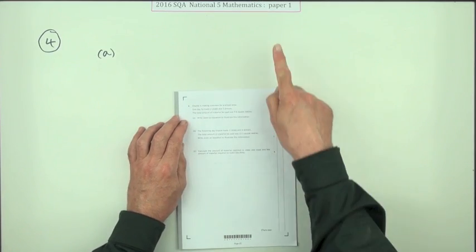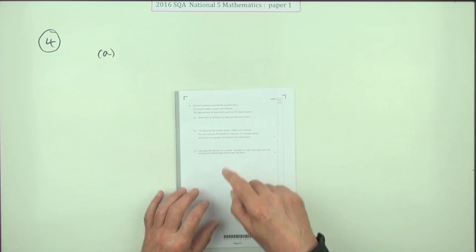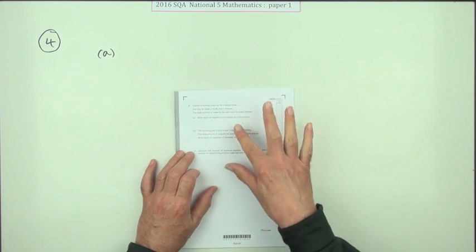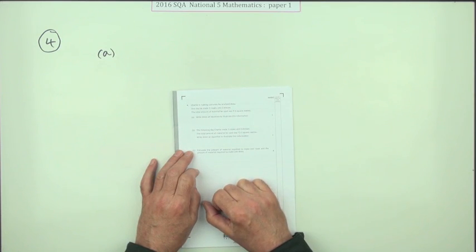So number four from paper one of the 2016 National 5. Here we go, six marks for the simultaneous equations. Should be okay except for the fact that you've got decimals at the ends of each equation.